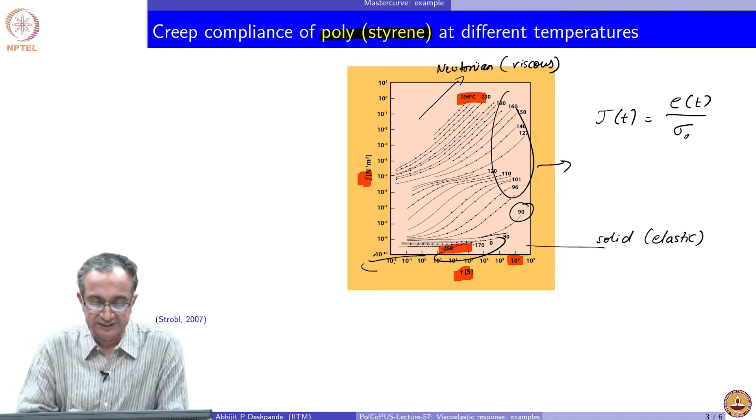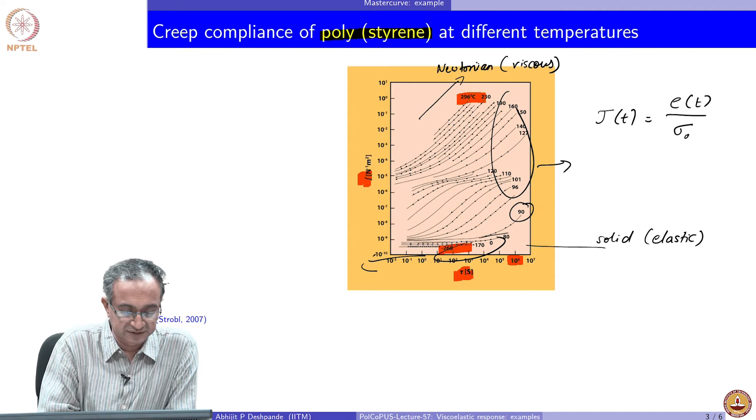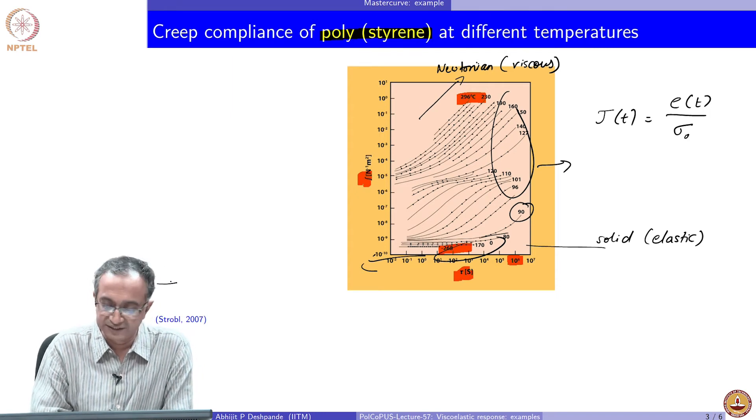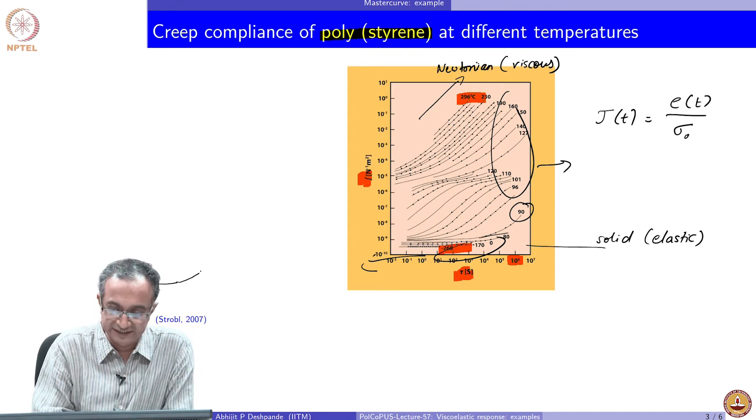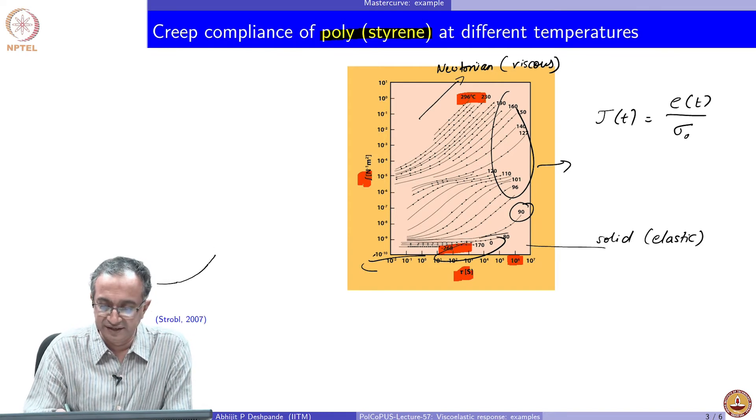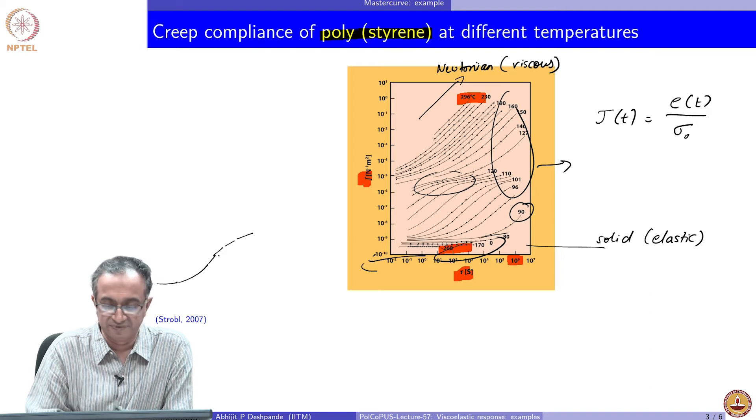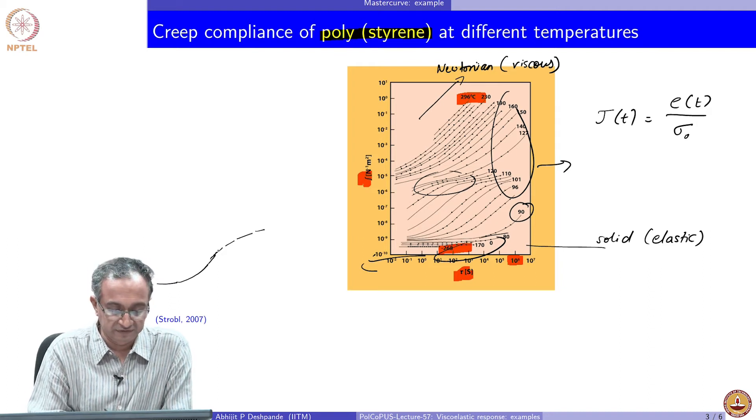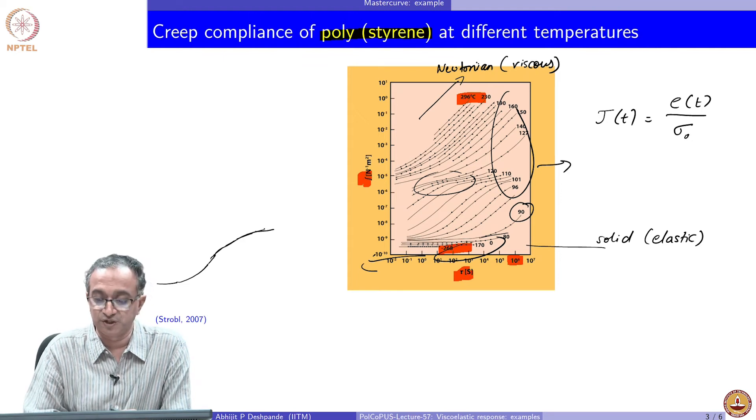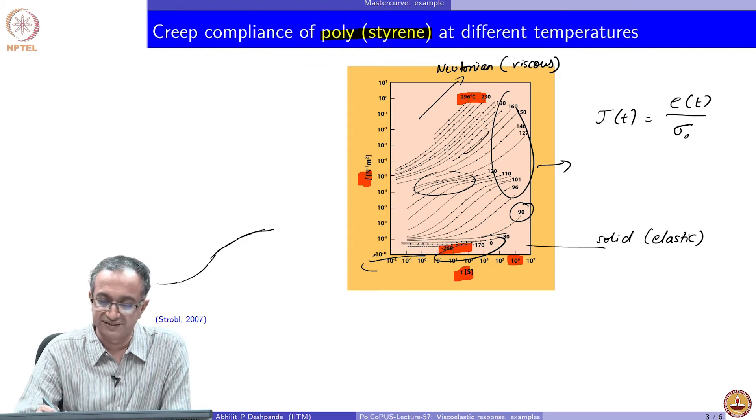And what you can see is initially the compliance is constant, then it increases. And then in this region, you can again see that when we stack different curves like this, preparing a master curve, what we will see is there is again a plateau and then again it starts increasing. So this is the type of master curve that we will get.